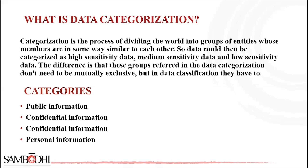There are different types of classification of data. First is public information — data in this category is typically maintained by state institutions and is subject to disclosure of public data as part of certain laws.